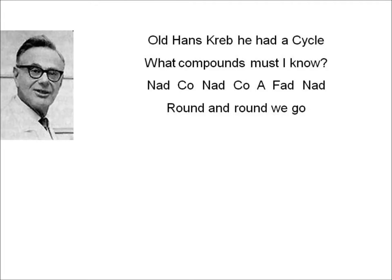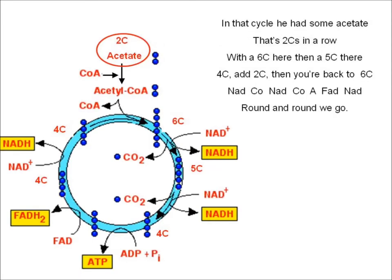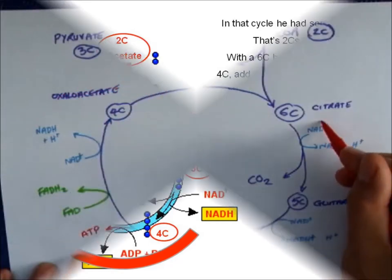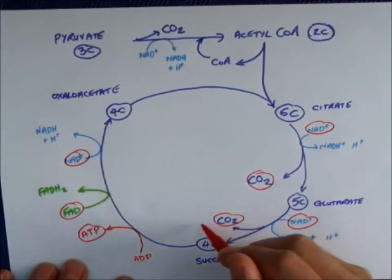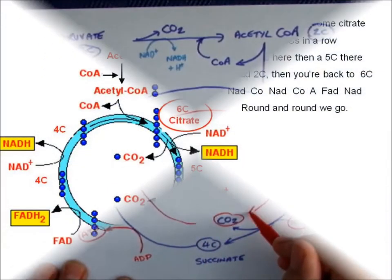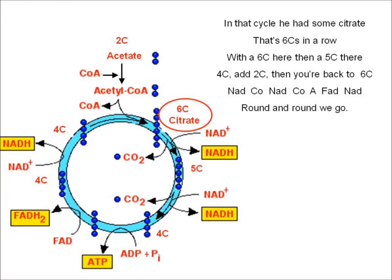Old Hans Krebs he had a cycle, what compounds must I know. NAD-CO, NAD-CO, A-FAD, NAD, round and round we go. In that cycle he had some citrate, that's 6 C's in a row. With a 6C here, then a 5C there, 4C, add 2C, then you're back to 6C. NAD, CO, NAD, CO, A, FAD, NAD, round and round we go.